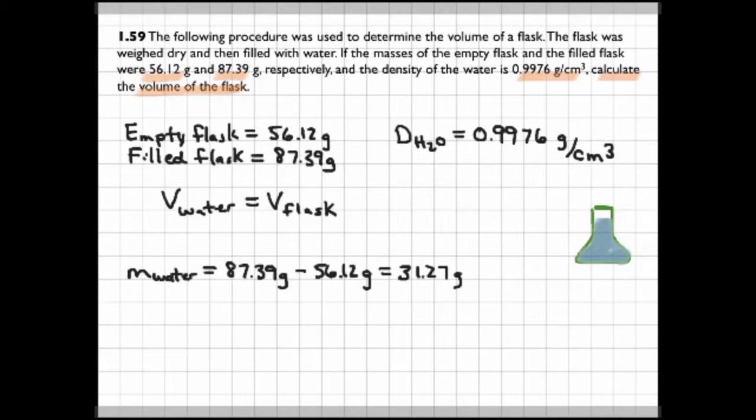The volume of the water can be calculated from its mass and its density. So volume of water equals 31.27 grams times 1 centimeter cubed over 0.9976 grams. Now notice that I've inverted the density so that the volume unit is on top and the mass unit on the bottom. So this way, the grams will cancel and we'll be left with the unit of volume centimeter cubed, which is what we want.